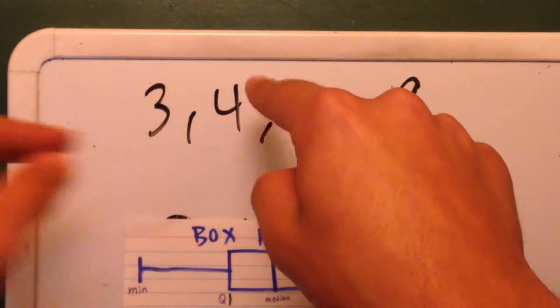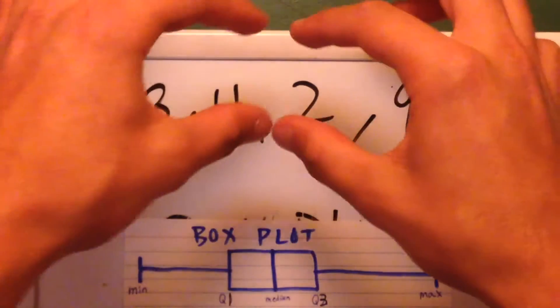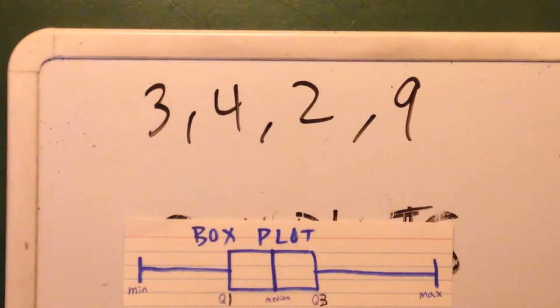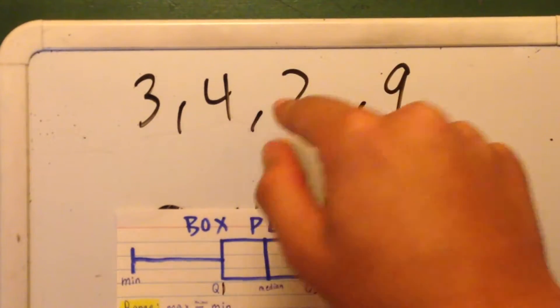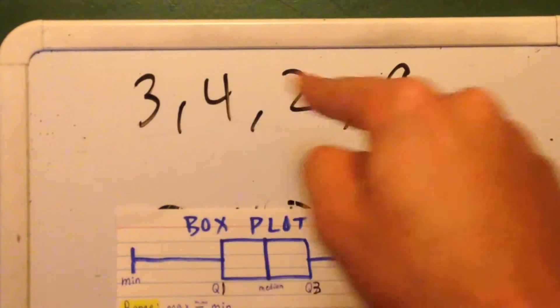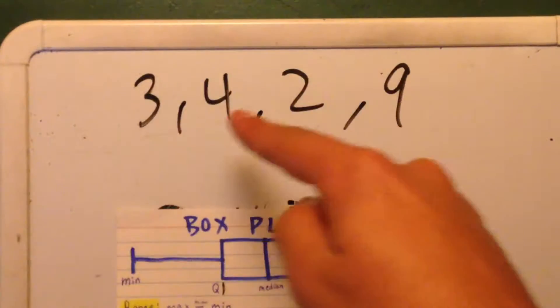And then the median, which is the middle number, in this case we have an even amount of numbers. So what's in the middle? There's just a comma, but no.